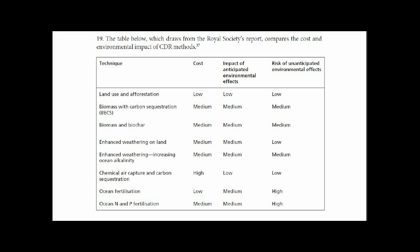Increasing ocean alkalinity: cost is medium, impacts are medium, and the risks are medium. Chemical air capture and carbon sequestration: the costs are high, impacts are low, and risk of unanticipated environmental effects are low.